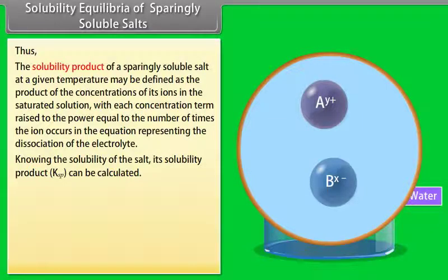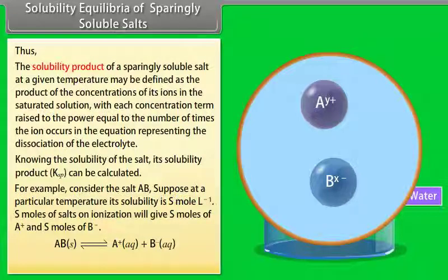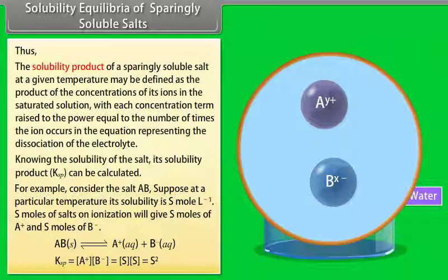For example, consider the salt AB. Suppose at a particular temperature its solubility is S mol L⁻¹. S moles of salt on ionization will give S moles of A⁺ and S moles of B⁻. Therefore, Ksp = [A⁺][B⁻] = S × S = S².